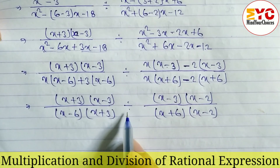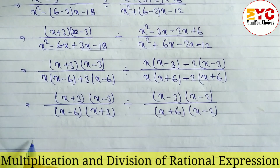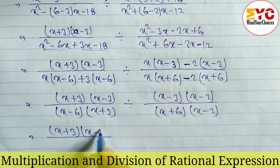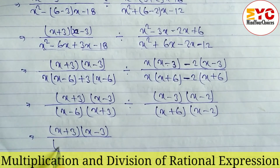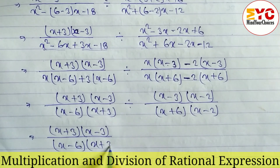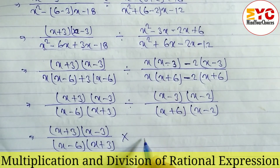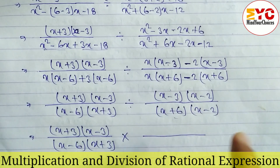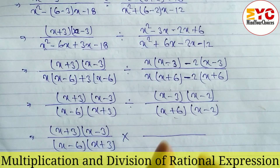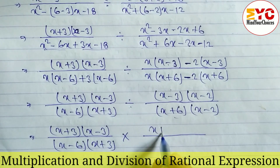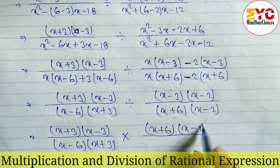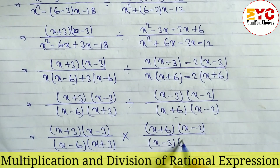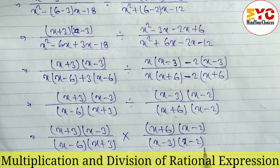In the next step, in place of division we write multiplication. So we have (x + 3)(x − 3) divided by (x − 6)(x + 3), and then we take the reciprocal of the second fraction — the denominator is written as numerator and the numerator as denominator — giving x minus 3 times x minus 2.